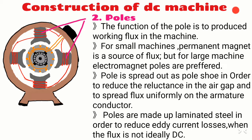The poles have a heteropolar structure with alternate north and south poles. The function of the poles is to produce working flux in the machine. The basic source of flux is a permanent magnet, which is uncontrollable in nature. In order to control the machine, flux needs to be controllable; therefore electromagnets are preferred, which require windings and a DC voltage known as excitation. Excitation is essentially DC because it produces a fixed flux. The pole shoes spread out the flux to reduce reluctance in the air gap and spread flux uniformly on the armature conductors. Both poles and pole shoes are made of steel laminations to reduce eddy current losses.